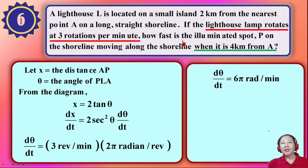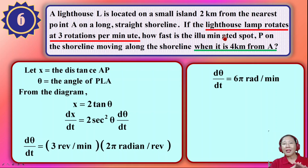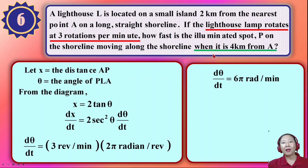The question asks how fast the illuminating spot is moving. Imagine the light rotating like a spotlight, moving from one place to another along the shoreline. The spot P moves along the shoreline when it is four kilometers from A. So we substitute x equals four into x equals two tan θ, giving tan θ equals two.